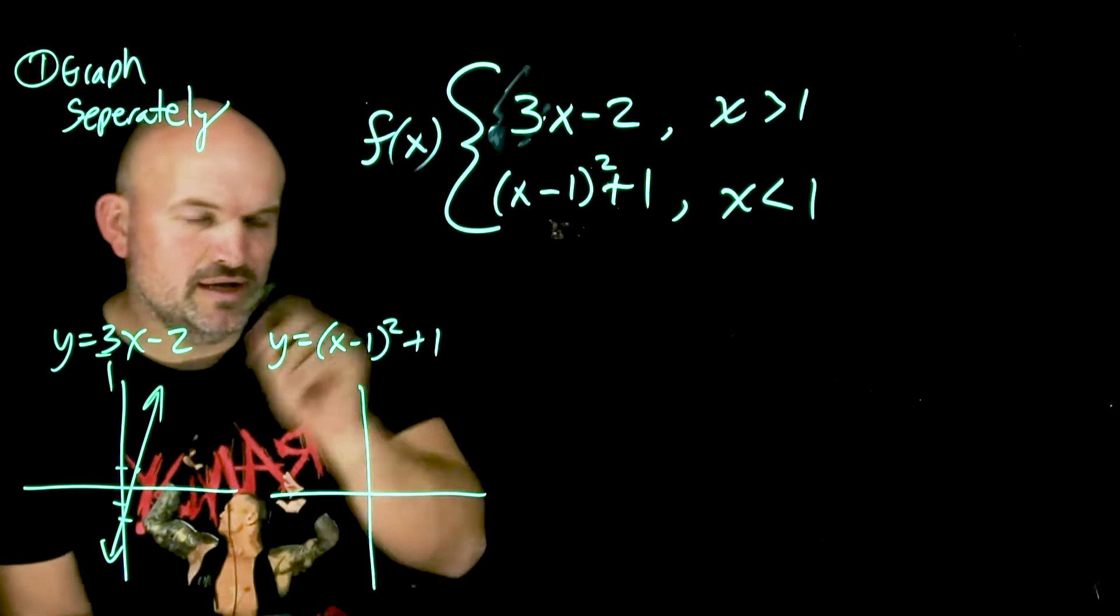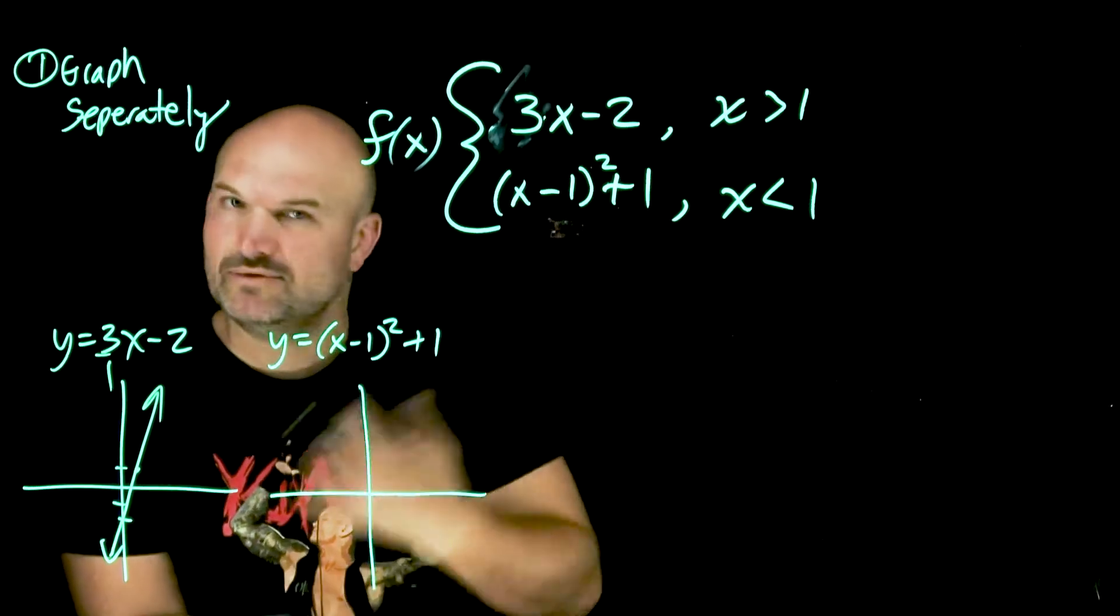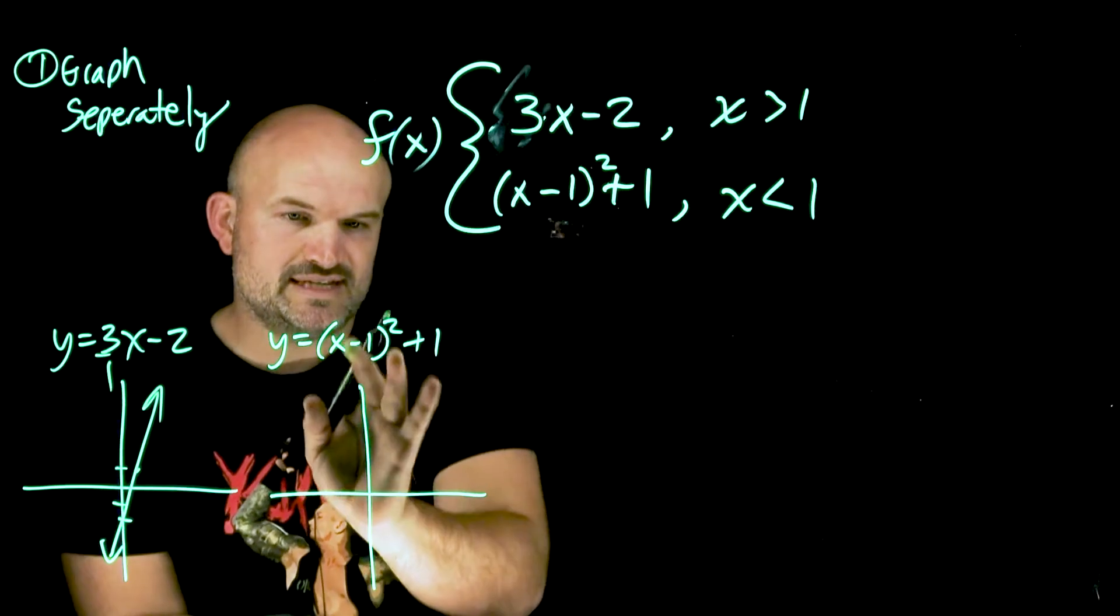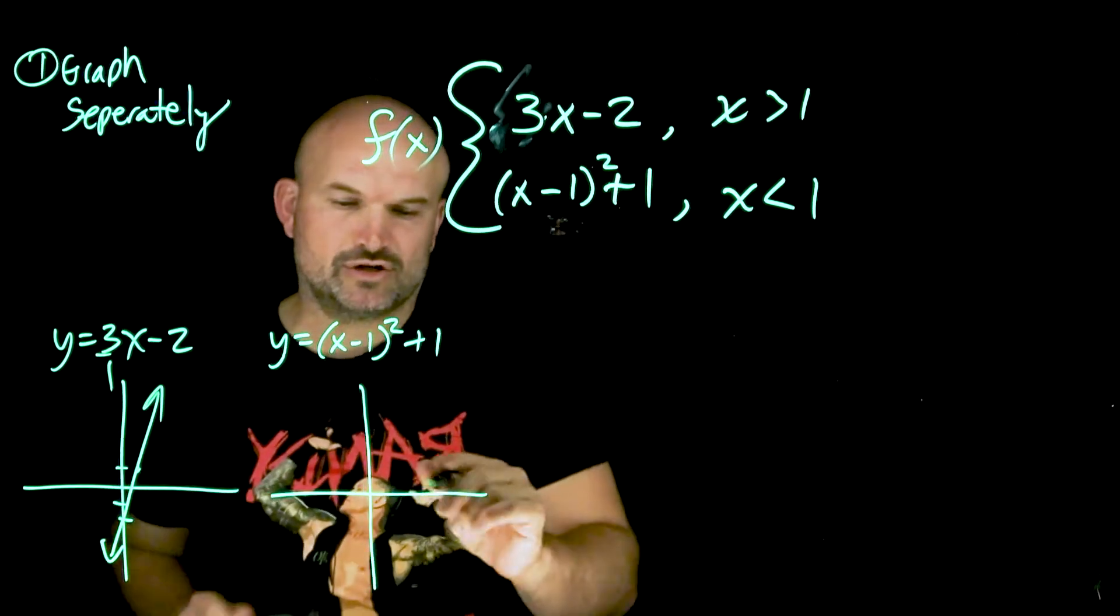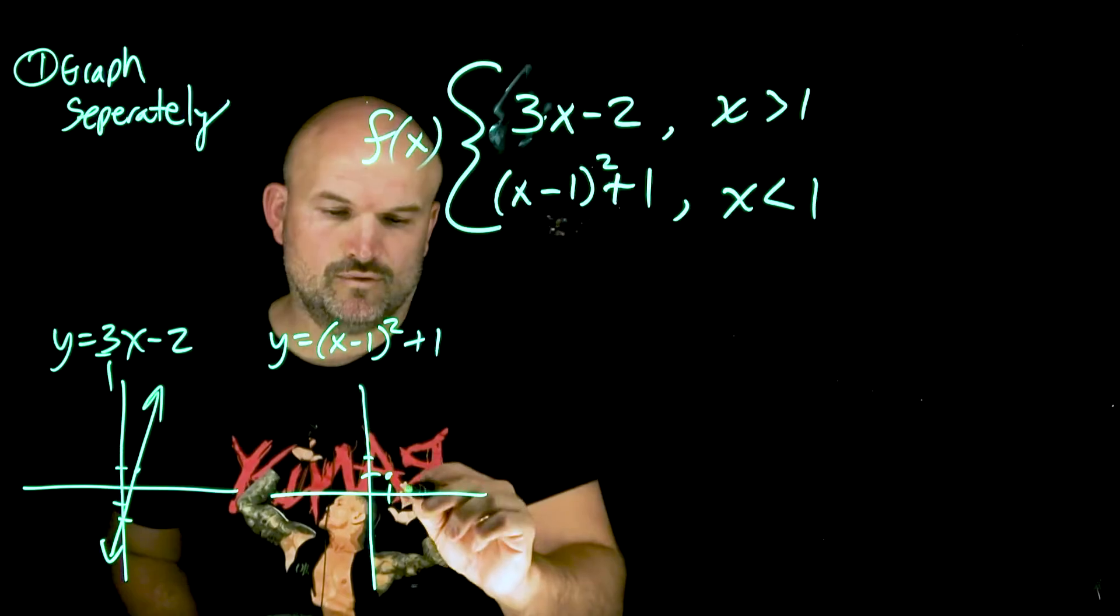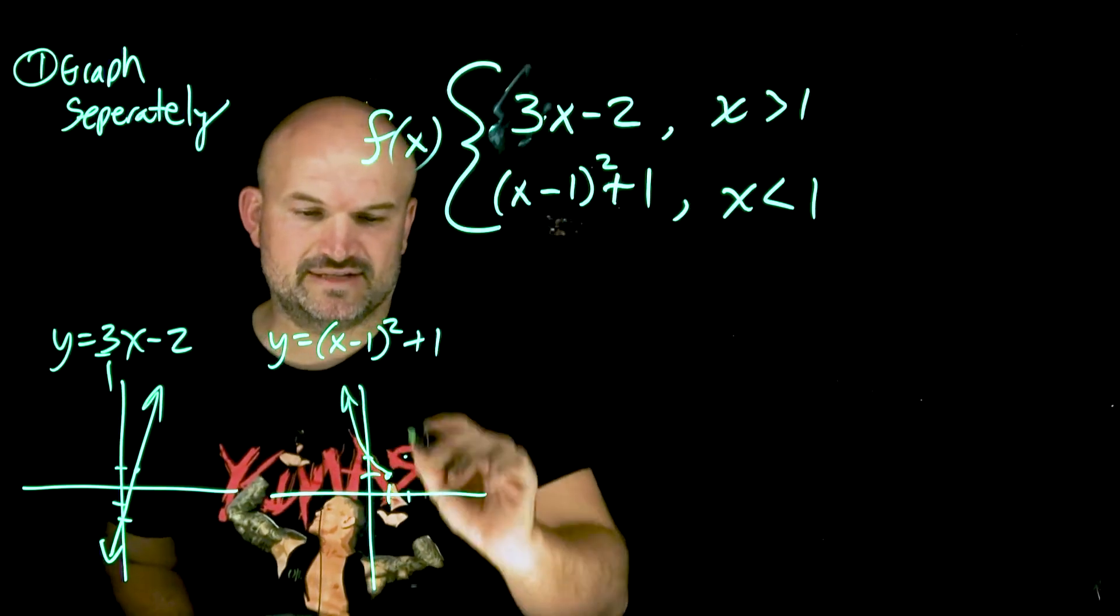And then we go to this one, where I have, this is going to be a quadratic. We learned these in algebra 2. This has a vertex of 1, 1, and there's no stretch or compression. So I can go over 1, and then over 1, and graph nice there.